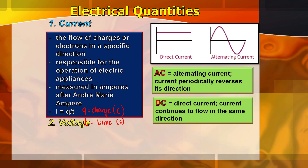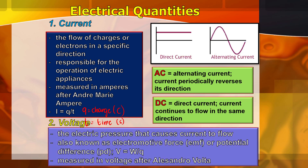Voltage is the electric pressure that causes current to flow, also known as electromotive force or potential difference. The formula for voltage, aside from Ohm's Law, is V = W/Q, where W is work done in Joules and Q is charge in Coulombs. Therefore, the unit for voltage can also be expressed as Joules per Coulomb. It is measured in Volts, named after Alessandro Volta.